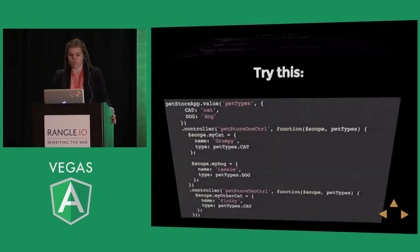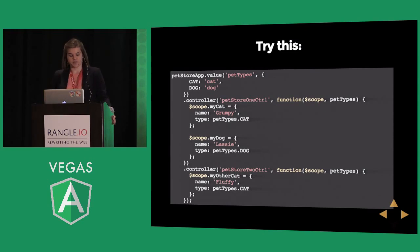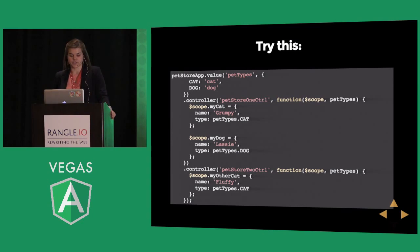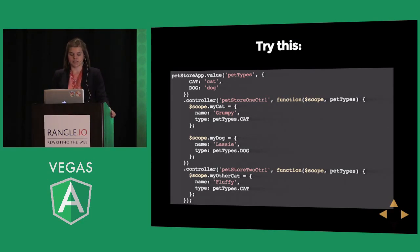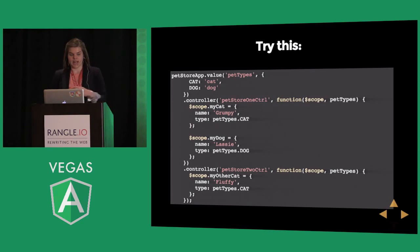What would be better is to use an Angular value. We can create a petTypes value with cat and dog properties — I have them all caps because I'm considering these constants for my particular app. Then we can inject that value into each controller that needs it. My code doesn't really change that much, but now instead of specifying the string directly, I'm just telling it to use petTypes.cat or petTypes.dog. Now it's a bit abstracted; I only have to change it in one place and it's less redundant.